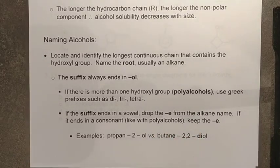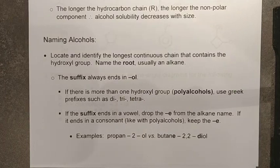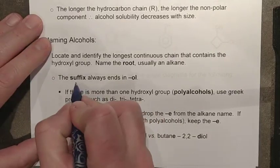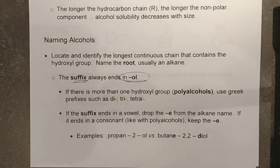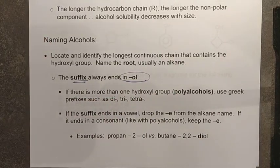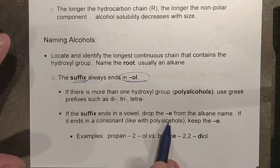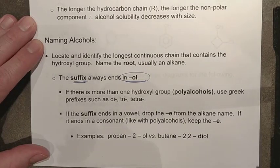Naming alcohols is pretty straightforward. The functional group can appear as a prefix or suffix, and the root is still the longest continuous chain - but it must have the OH group attached along that longest continuous stretch. The suffix changes: we add '-ol', hence alcohol. When the suffix of your longest carbon chain ends in a vowel, drop that vowel. So hexane becomes hexanol, not hexane-ol.